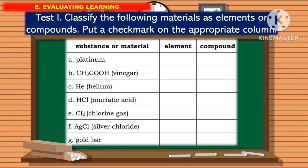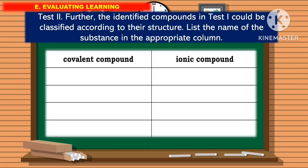For Test 2 of evaluating the learning, the identified compounds in Test 1 could be classified according to their structures. So, list the name of the substance in the appropriate column.